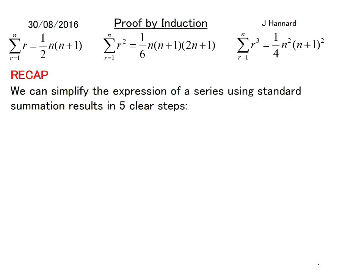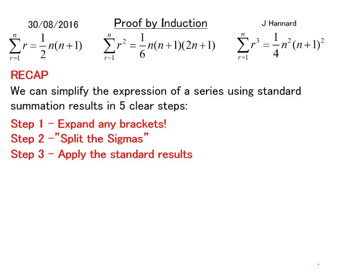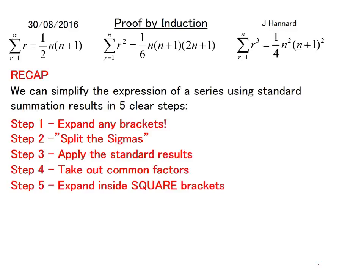So a recap: we're going to simplify the expression of a series using standard summation results in 5 clear steps. First, you expand any brackets. Then you split the sigmas. Then you apply the standard results. Take out common factors and expand inside the square brackets.